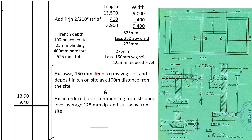We need to know the level to which we shall reduce. We reduce the level to where we start to lay the hard core. We calculate everything that is above the reduced level: 100 for the concrete, 25 for the blinding, and 400 for the hard core. The total above the reduced level is 525.